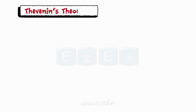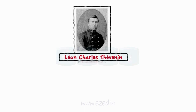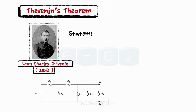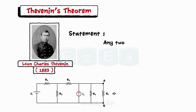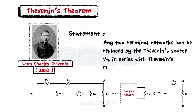There is another method to calculate the branch current through a particular resistance. This theorem was stated by French engineer Leon Charles Thevenin in 1883, and hence given the name Thevenin's Theorem. According to this theorem, any two-terminal network can be replaced by the Thevenin's source Vth in series with Thevenin's resistance Rth.